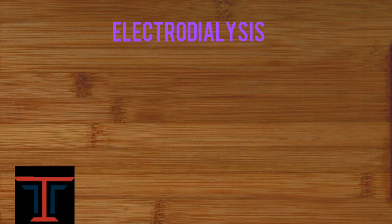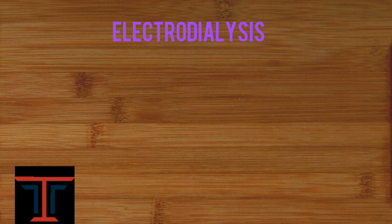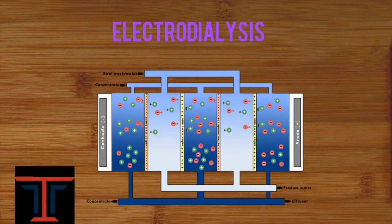Next comes electro dialysis. It is an external treatment process used to remove ionic impurities from hard water. It is done in the electro dialysis cell which consists of two electrodes, cathode and anode, and semi-permeable membranes or anionic membranes. These semi-permeable membranes do not allow ions of opposite charge to move to the other surface.